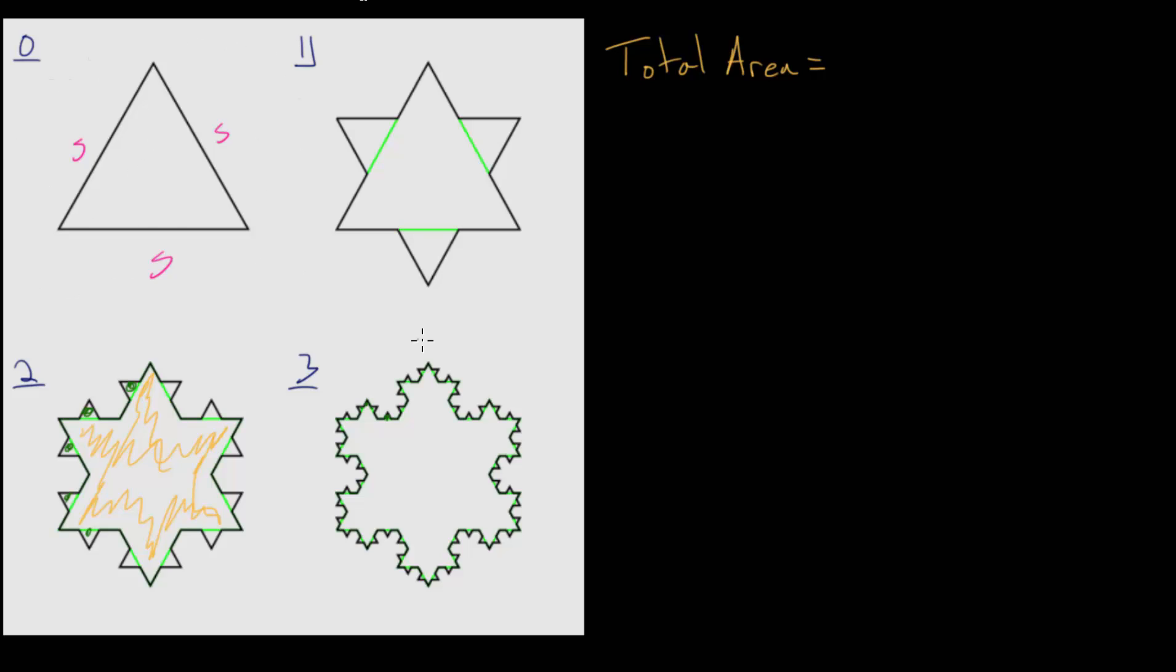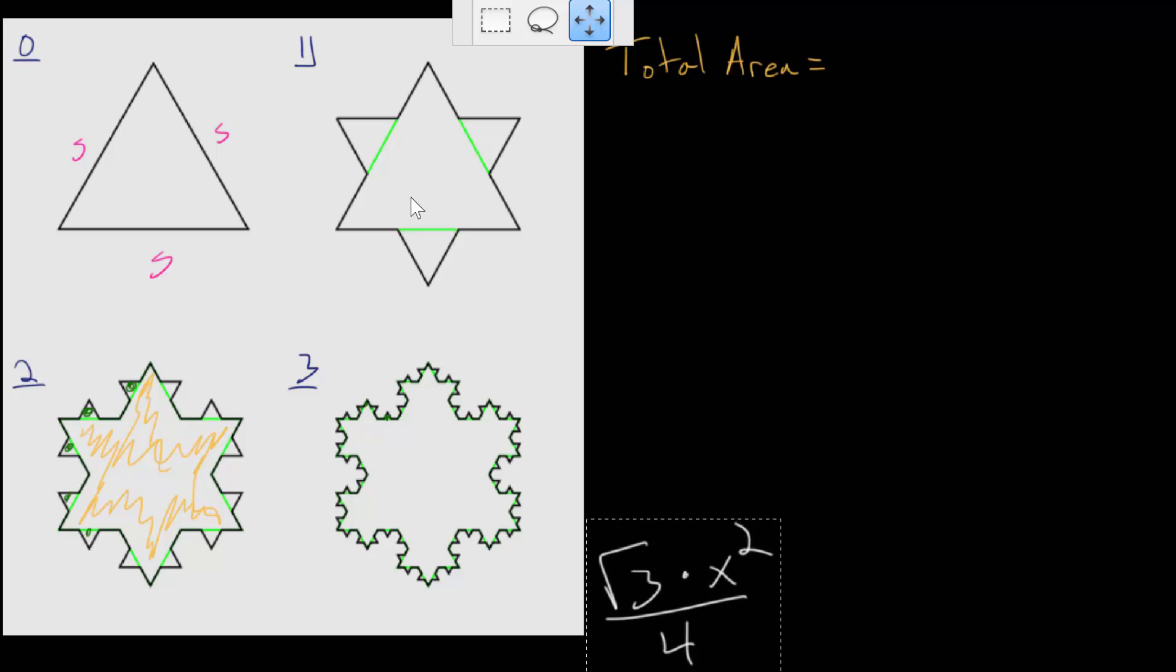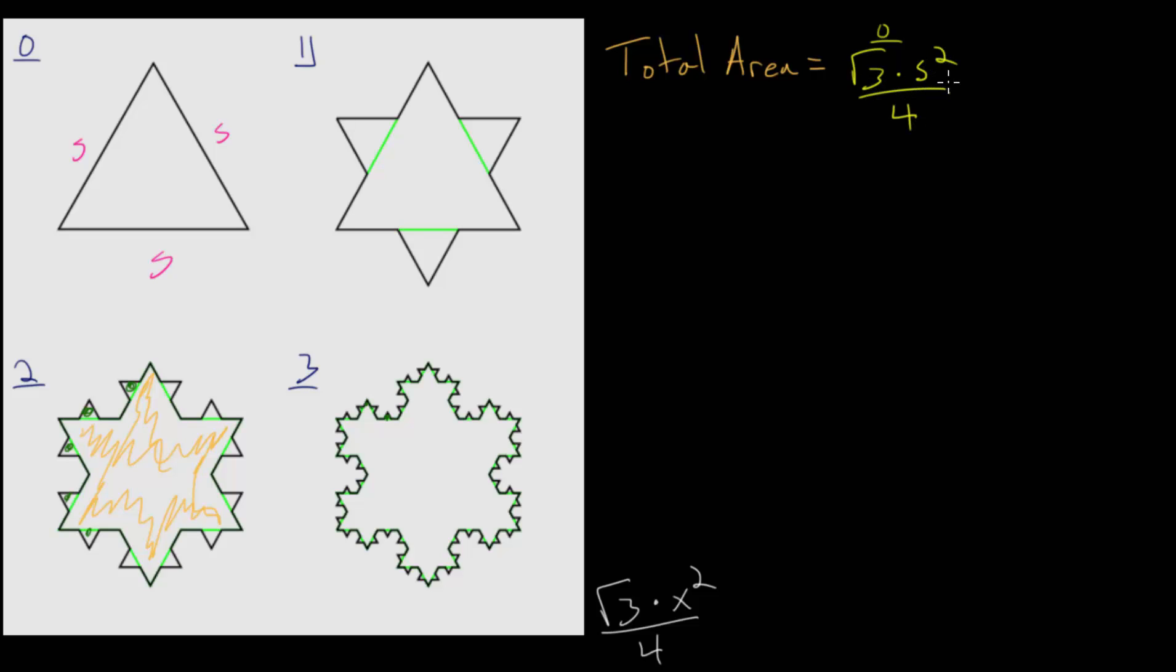So if we start with this first equilateral triangle, let me paste in the formula for a general equilateral triangle, and we'll need a lot of room for this, so let me make it a little bit smaller. And we know the side lengths are s, which we can just replace with x here. So the total area after step 0, we would have the square root of 3 multiplied by s squared divided by 4.